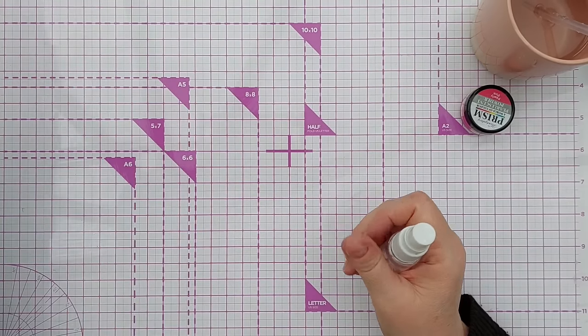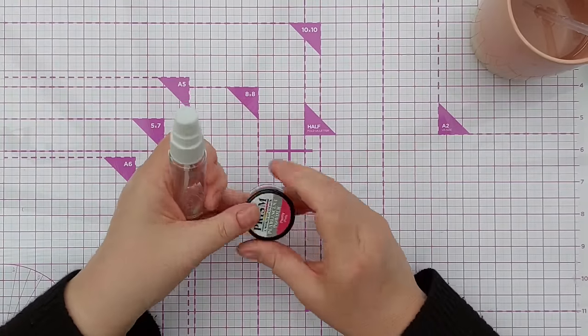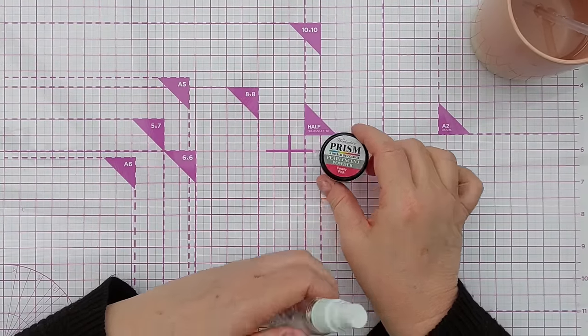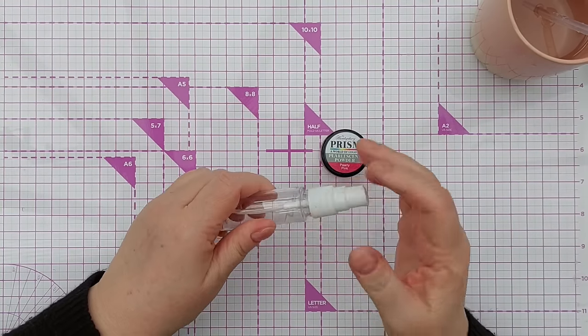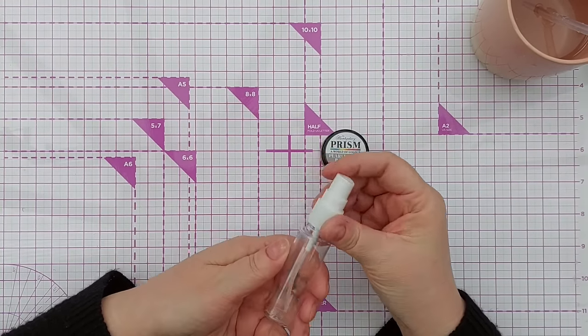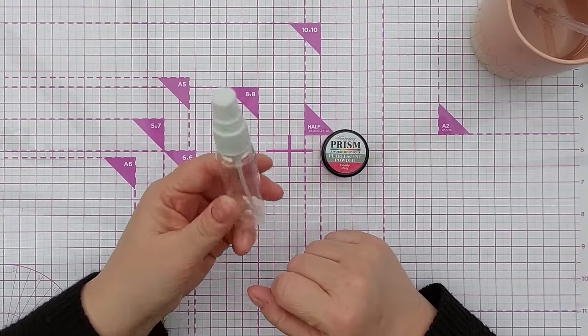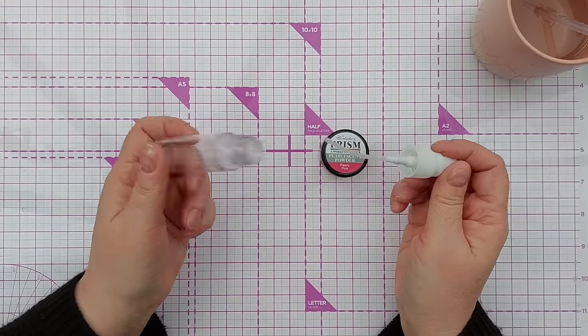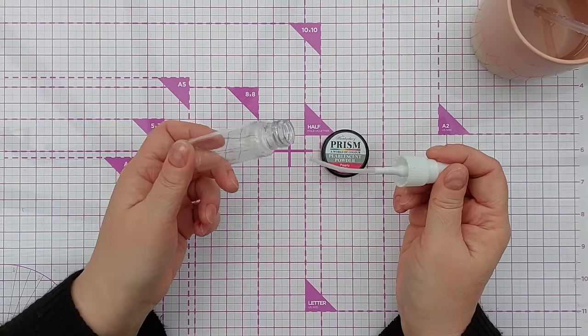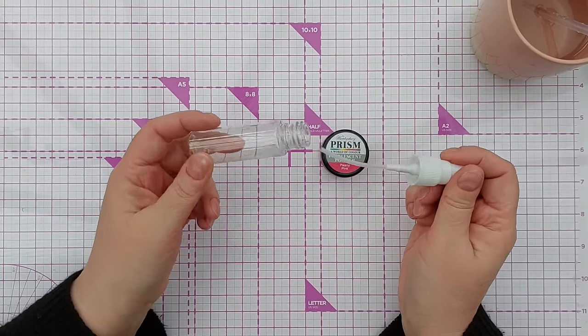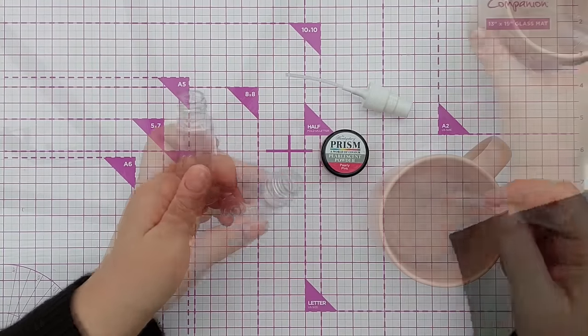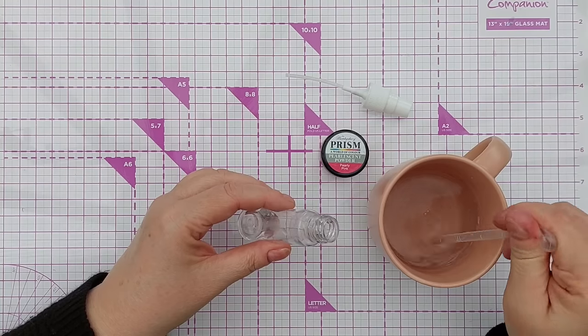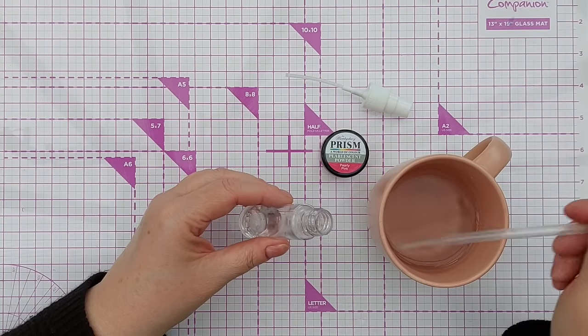This one was made from green luscious powder. Today I'm going to make one from Hunky Dory Prism World of Color pearlescent powder in Pearly Pink. These little squirters or misters I got from Amazon, but you can get them from a pharmacy or pound shop or the travel section of a supermarket. I'm going to add some water to my bottle.